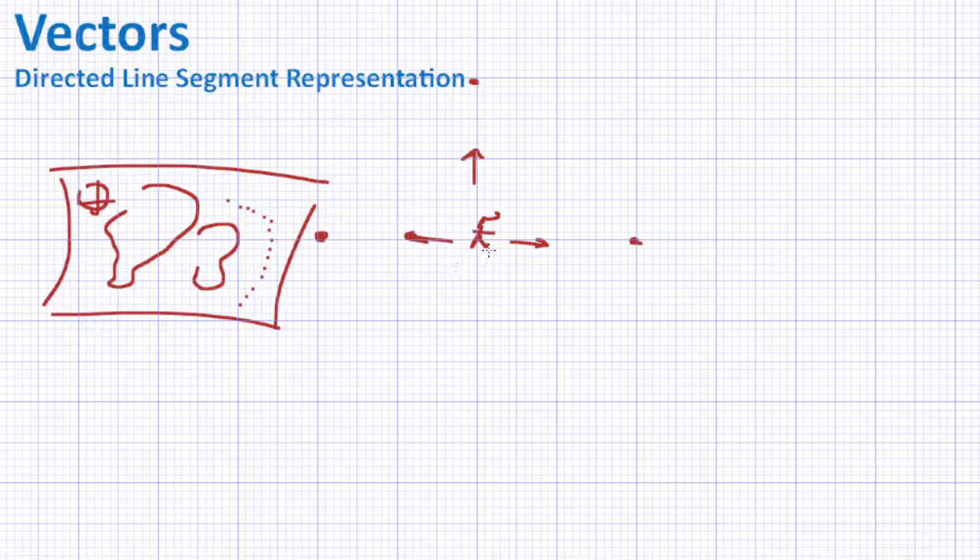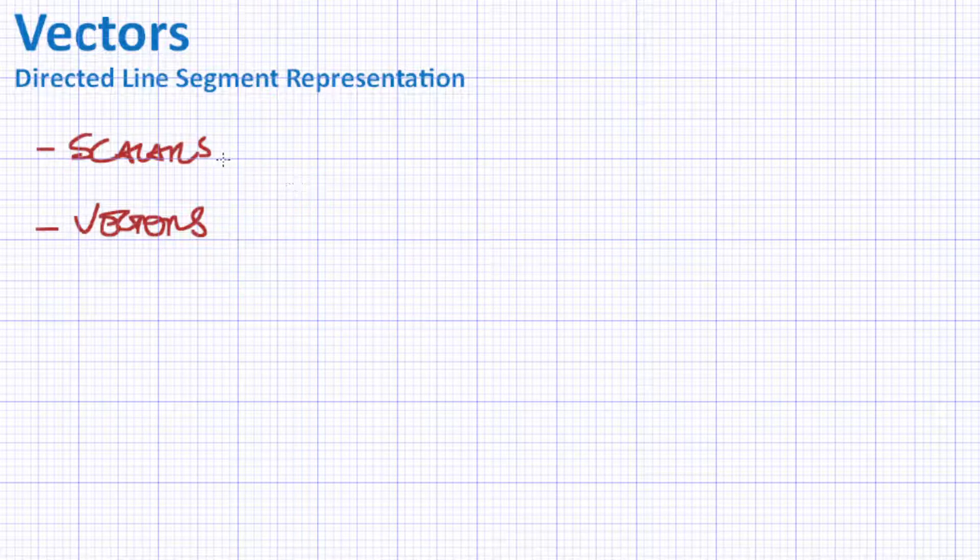For situations in which we not only need to know how large a quantity is, but also where is it pointing towards or where is it directed to, we need vectors. So we can split our classification of quantities into scalars and vectors.